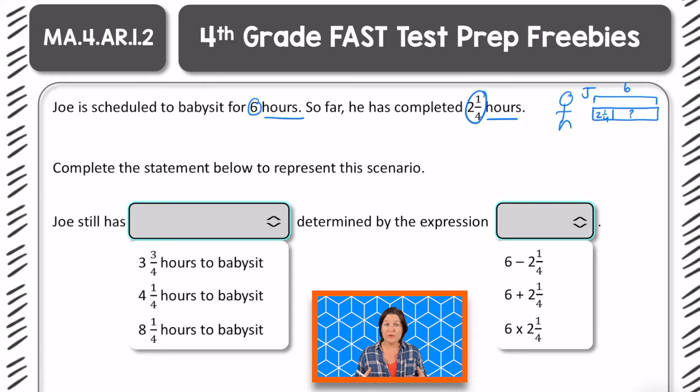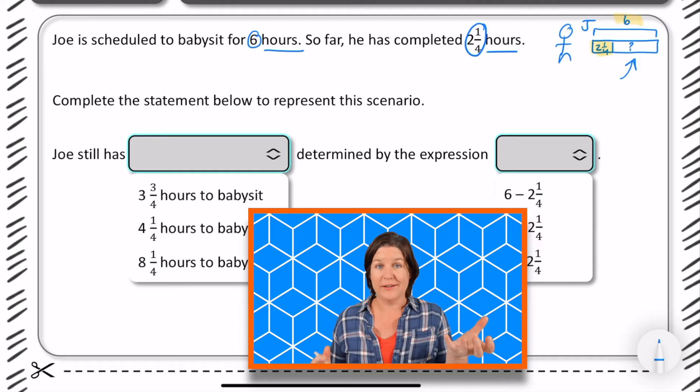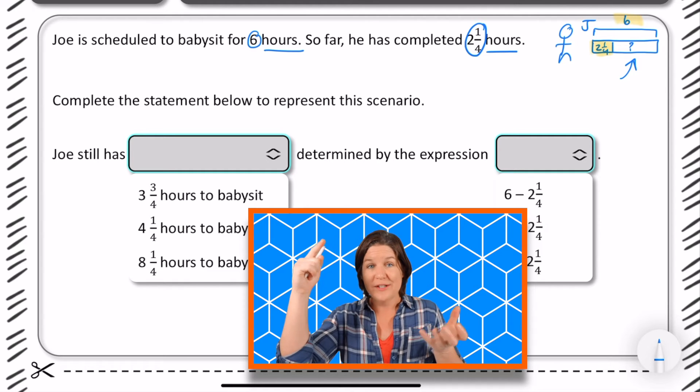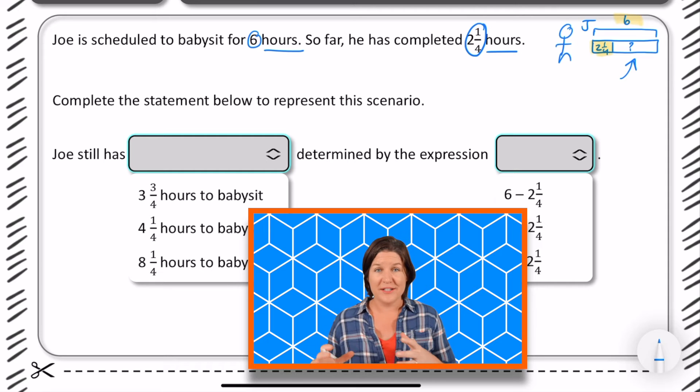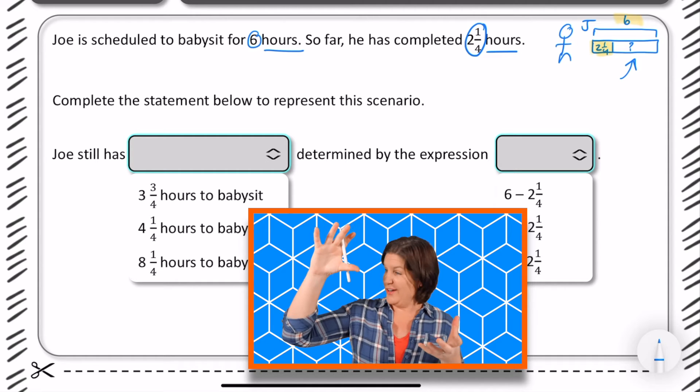Complete the statement below to represent this scenario. Joe still has how many hours to babysit determined by the expression of subtracting, addition, or multiplying those two numbers. So we know the total is six hours that he's scheduled to babysit. We know so far he's completed two and one-fourth hours, and it says here how much does he still have to complete. That would be determined by this right here. So basically we know part of what he's completed, we know the whole that he's trying to get to - six whole hours - and we're trying to figure out the missing part.